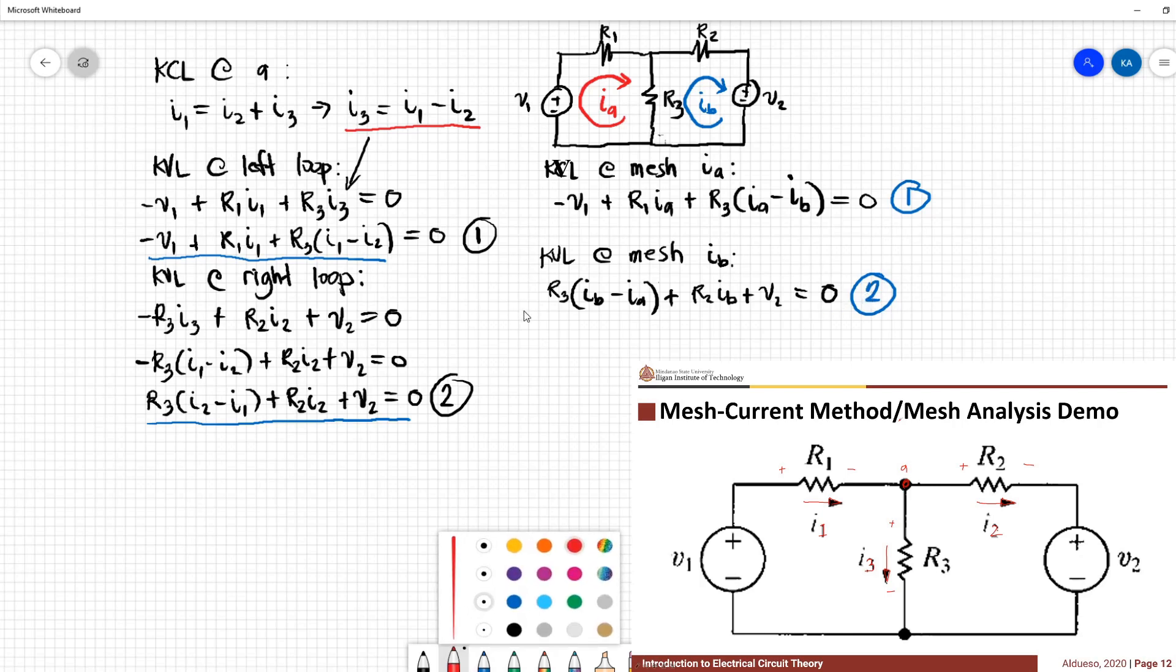If we compare equation 1 and equation 2 to the mesh equations, notice that we can say that i1 is equivalent to Ia and i2 is equivalent to Ib. The branch current i1 is equivalent to the mesh current Ia, the branch current i2 is equivalent to the mesh current Ib, then the branch current i3 is equivalent to mesh current Ia minus mesh current Ib.